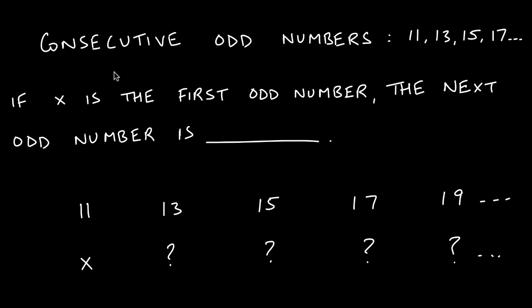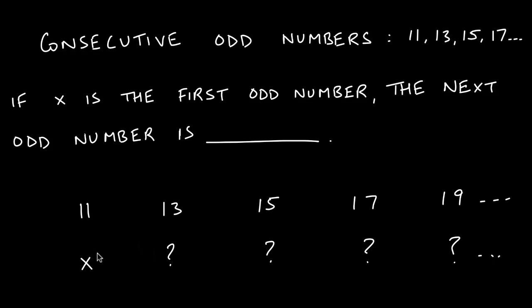This one I left as an exercise because there are common misconceptions with this theme. Consecutive odd numbers are like 11, 13, 15, 17, 19, 21, 23. If the first odd number is x, figure out what the next odd number would be in terms of x, and the one after that, and so on. Fill in these blanks before working on word problems, and convince yourself that whatever you put matches the jumps between the numbers—don't just write something down and say 'I'm pretty sure I'm right.'